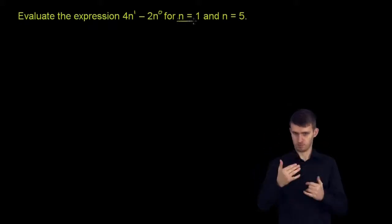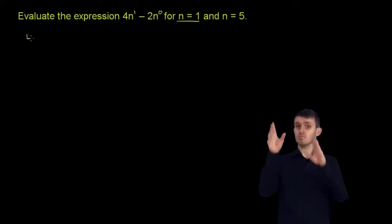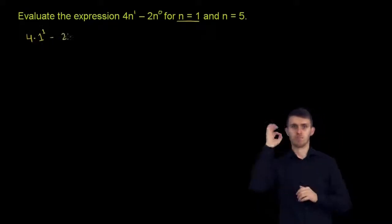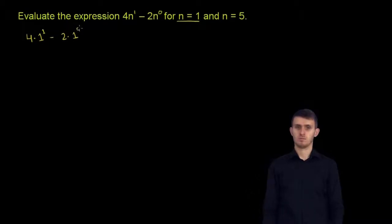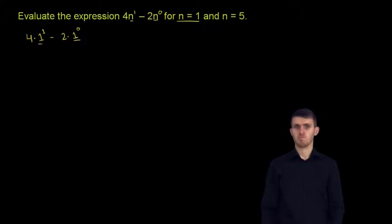So let's do n equals 1 first. Every place we see an n, let's put a 1 in there. So this is equal to 4 times 1 to the first power minus 2 times 1 to the 0 power. Every place we saw an n, we have a 1 there—n to the first becomes 1 to the first.